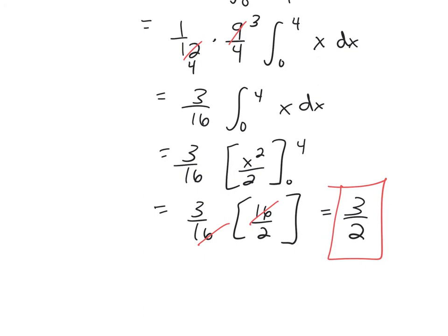So average value is very similar to how it was set up for a function of a single variable, but here we have a function of more than one variable.